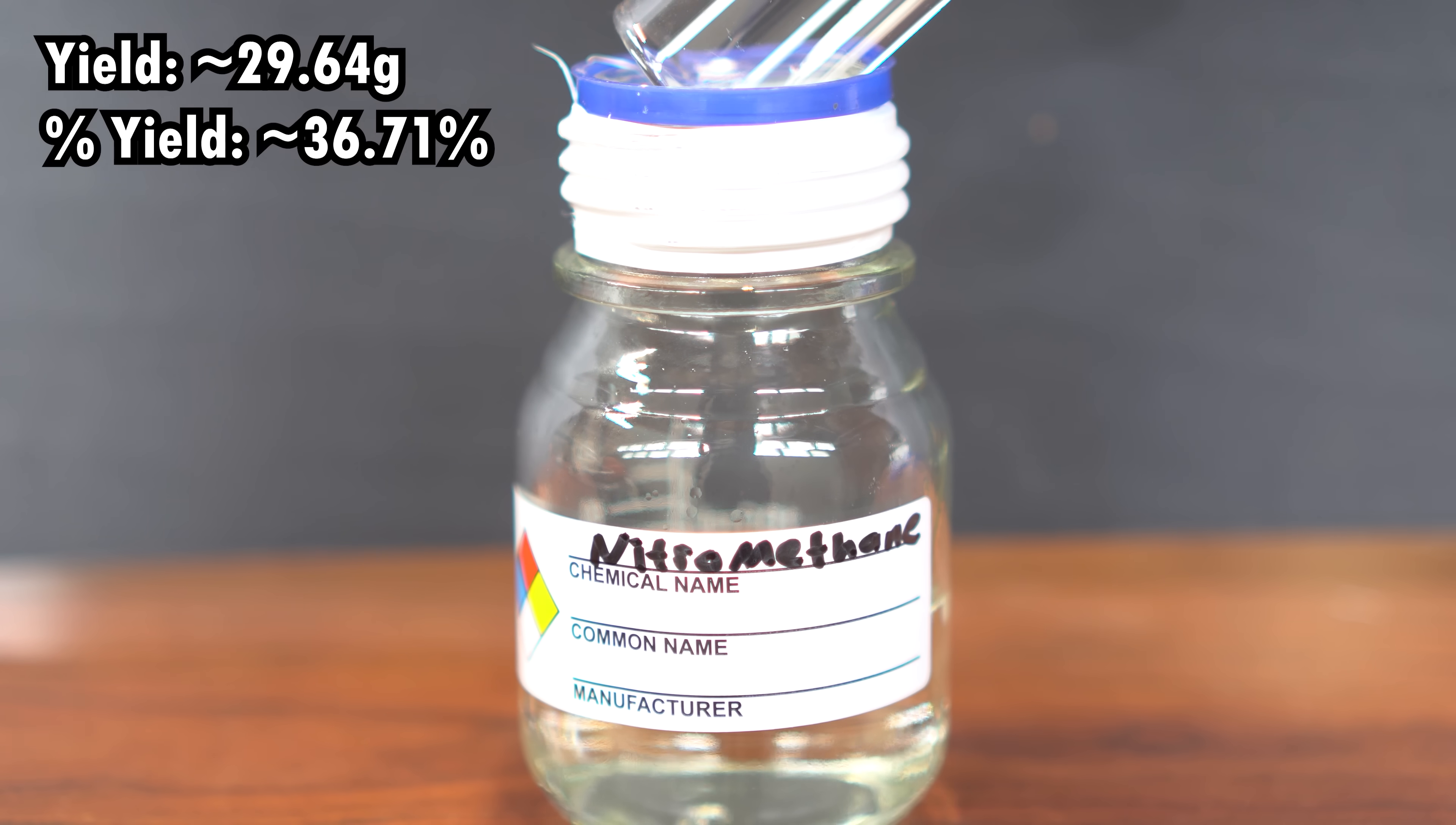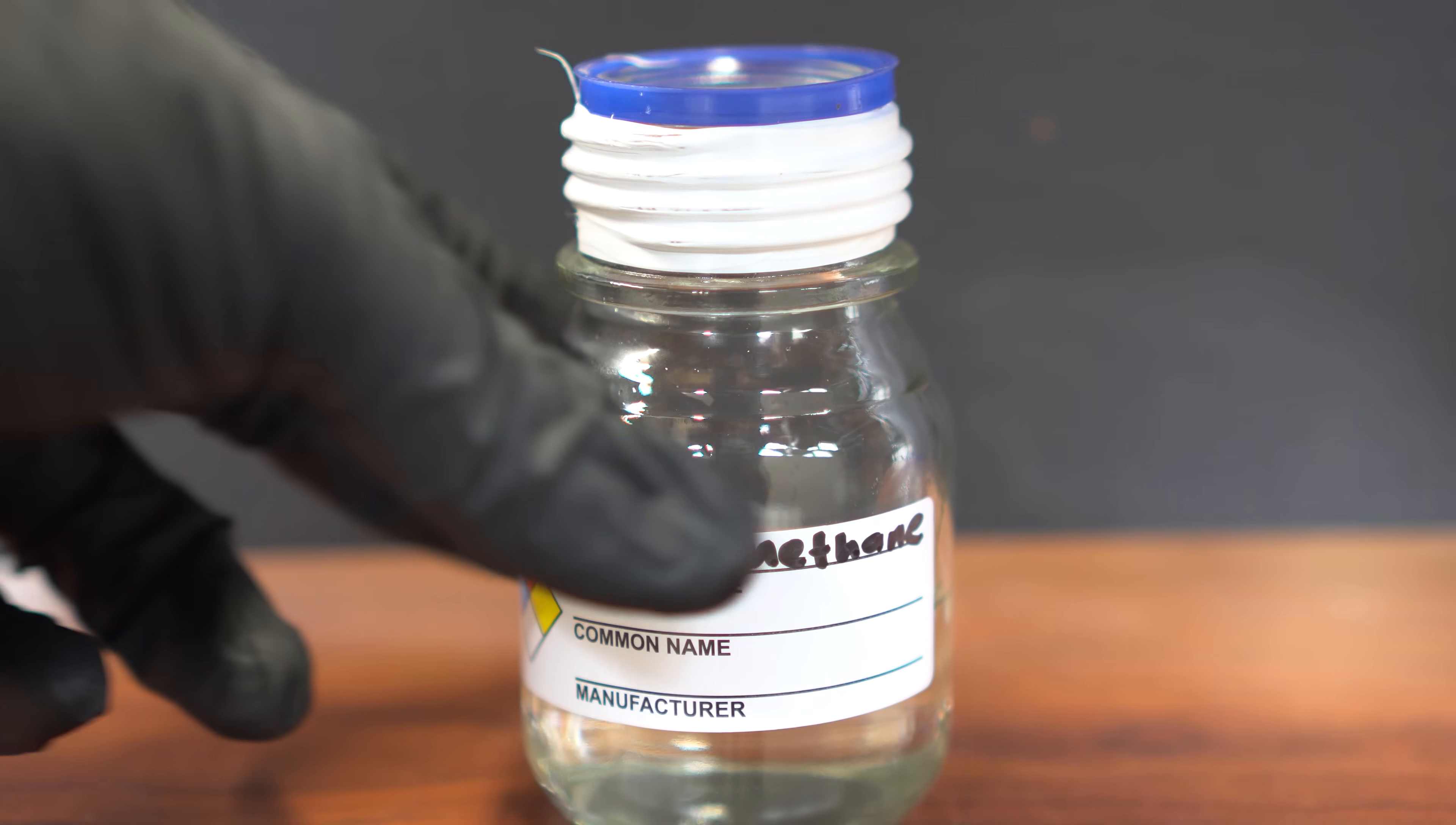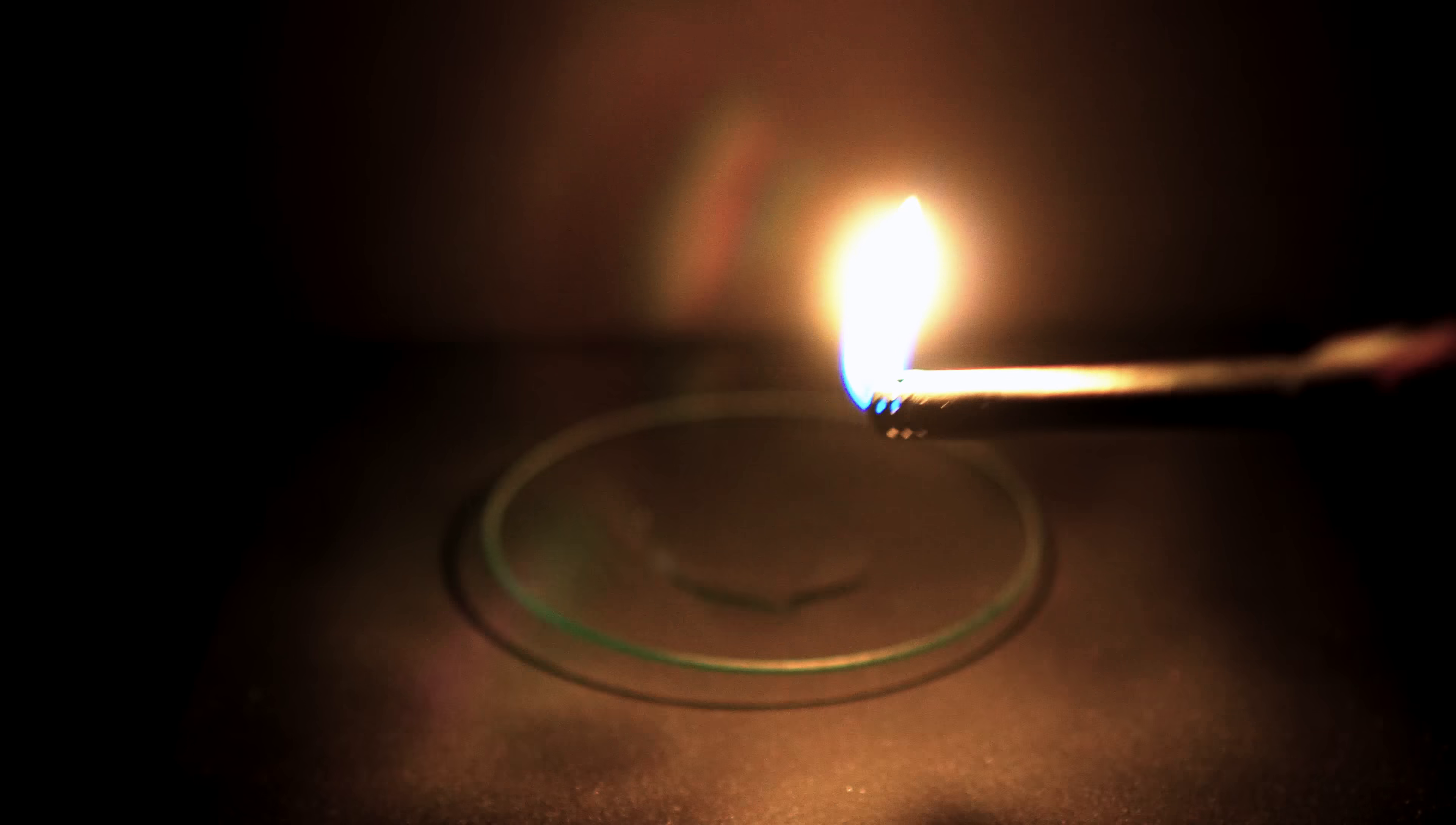It was also suggested that improving yields is pretty obtainable by adding boric acid when you add the sodium nitrite in. This is because sodium bicarbonate is destroyed by the boric acid, which prevents the alkaline hydrolysis of the sodium chloroacetate.